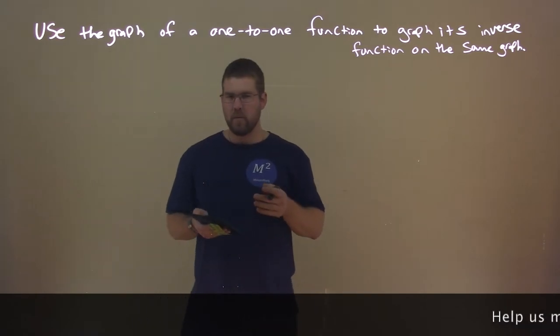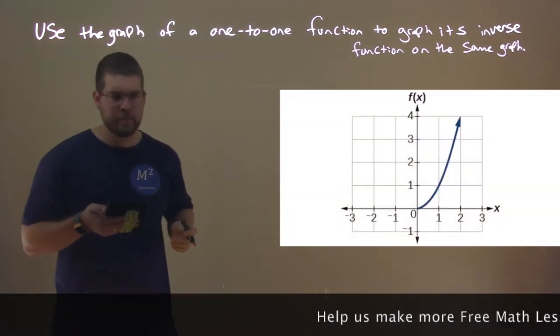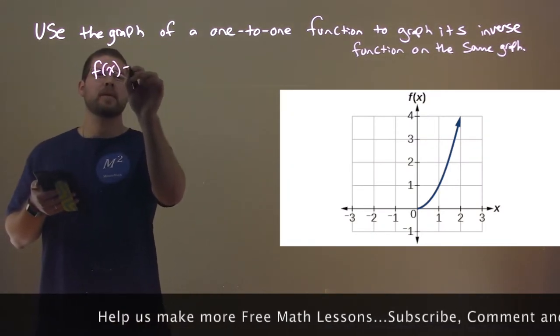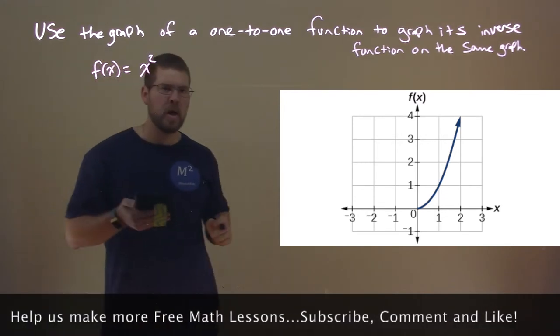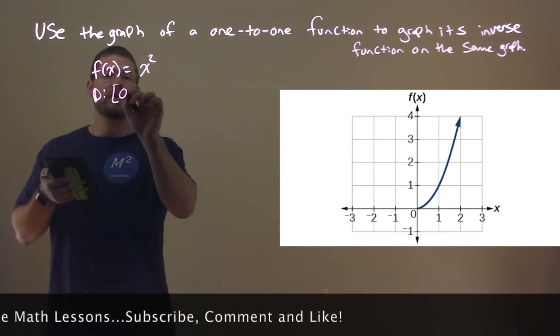So, how do we find inverse functions? Let's look at this graph right here. It looks fairly familiar. It is because this function is f of x equals x squared, but we've restricted the domain from zero to infinity.